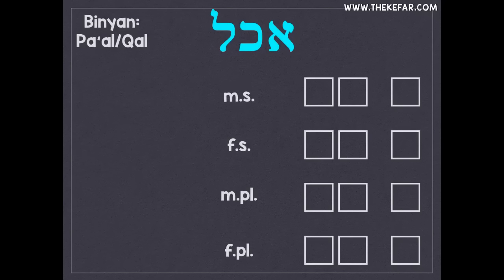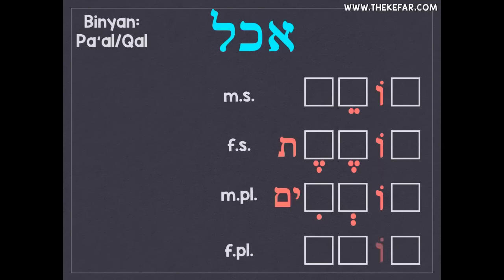Here are the four vowel sound patterns for Pa'al present tense: masculine singular is o-e; feminine singular is o-e-et; masculine plural is o-e-im; and if you know Hebrew pluralization, you can guess that feminine plural is o-ot. So: o-e, o-e-et, o-e-im, and o-ot.